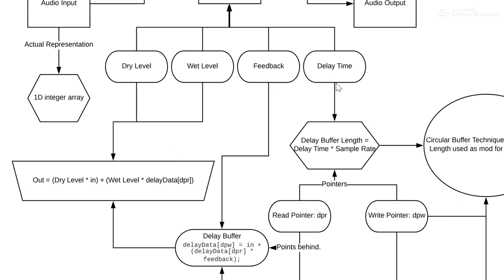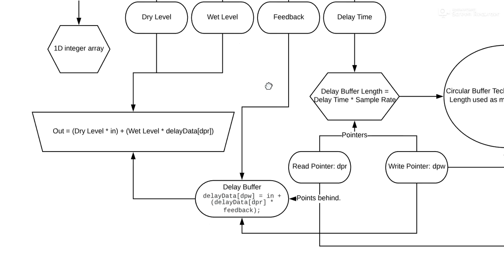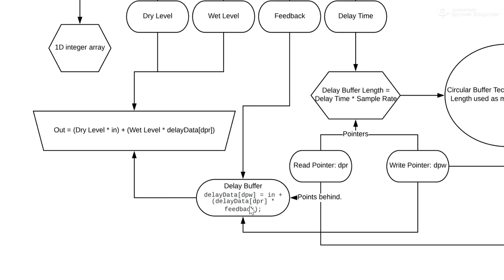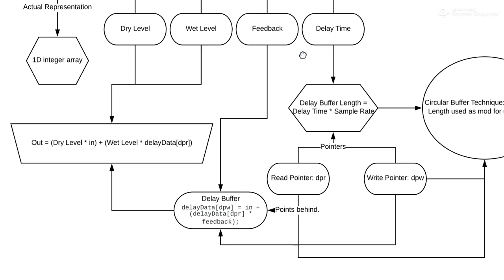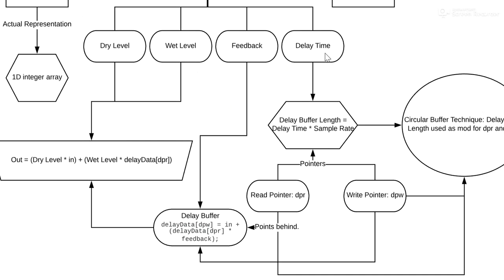Feedback and delay time are the more important parameters. Feedback is a ratio — a float between zero and one — that determines how much of the input we're writing to the output. Delay time determines the delay buffer length, which is delay time multiplied by the sample rate. Sample rate is simply how many times the computer records an integer per second — usually 44,100 Hz — and this determines the maximum length of the array.